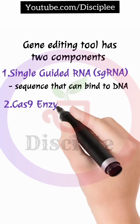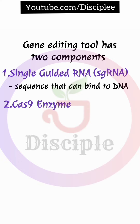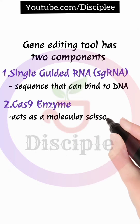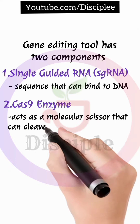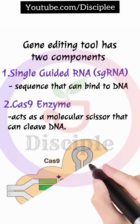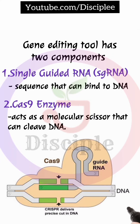Another component of the gene editing tool is the Cas9 enzyme. The Cas9 enzyme acts as a molecular scissor that can cleave or cut out that particular viral DNA.